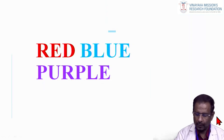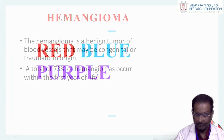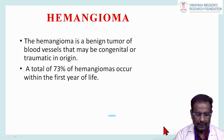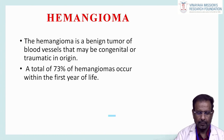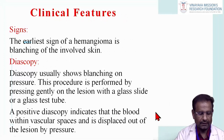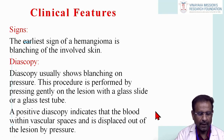Starting with red/blue/purple lesions: hemangioma is a benign tumor of blood vessels that may be congenital or traumatic in origin. 73% of hemangiomas occur within the first year of life. The earliest sign is blanching of the involved skin. Blanching is the initial sign.